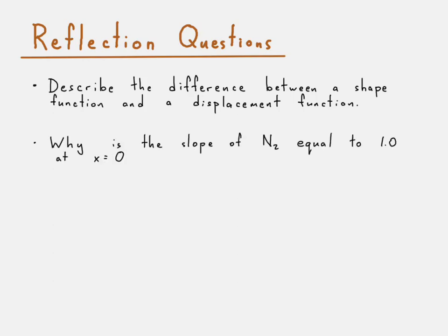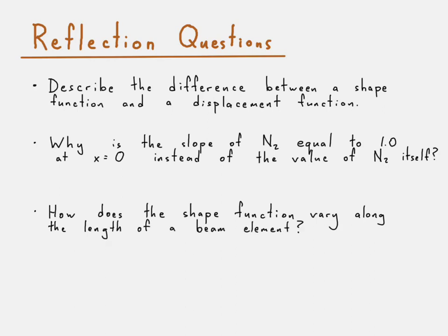And then we'll say well why is the slope of the second shape function equal to 1.0 at x equals zero instead of the value of the second shape function itself? And then we can ask well how does the shape function vary along the length of a beam element? In other words what type of polynomial can describe its variation? And we can ask the same question for the displacement function for the beam element. How does it vary along the beam element? And what type of polynomial can describe that? And that concludes this presentation on the shape functions and displacement function for a beam element.